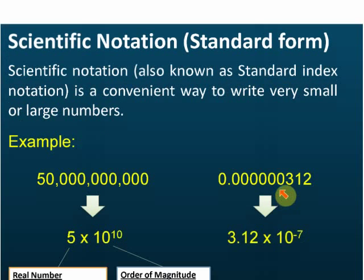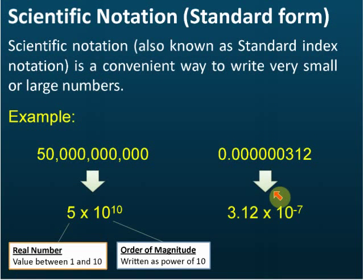Now let's continue with scientific notations. As I mentioned, scientific notation is also called standard form, and it's the first chapter in your modern math. It's a convenient way to write very small or very large numbers.